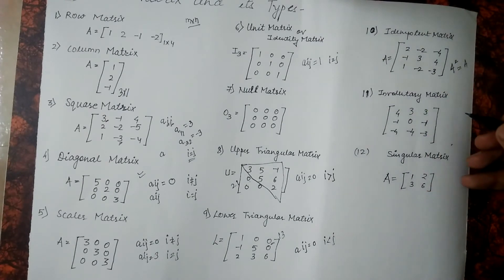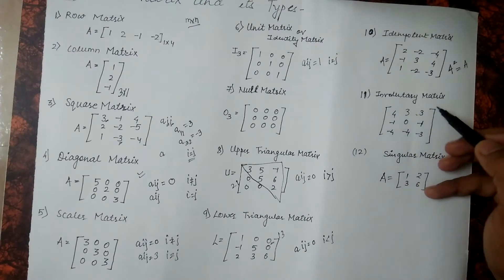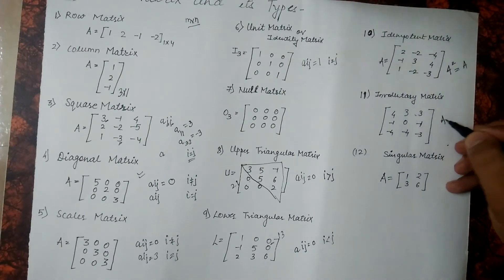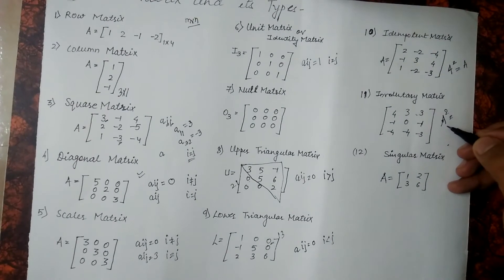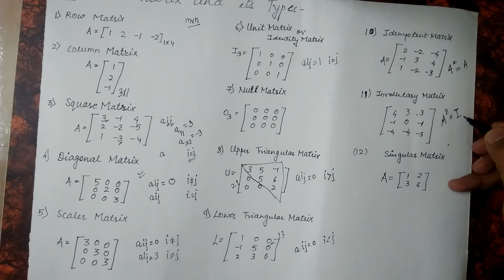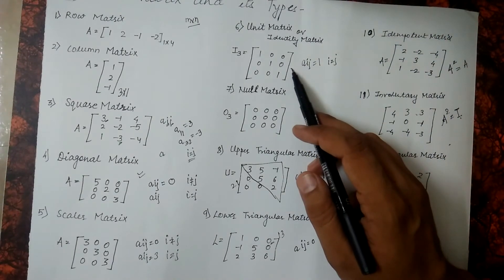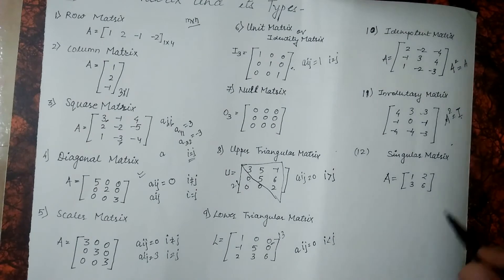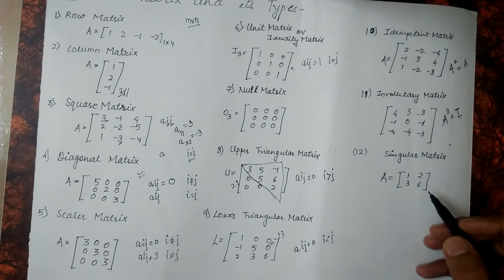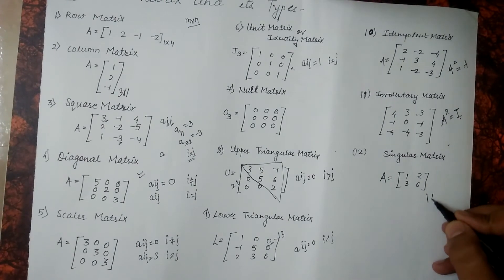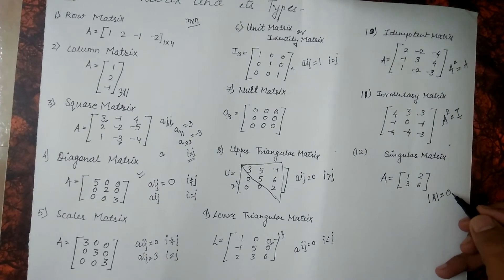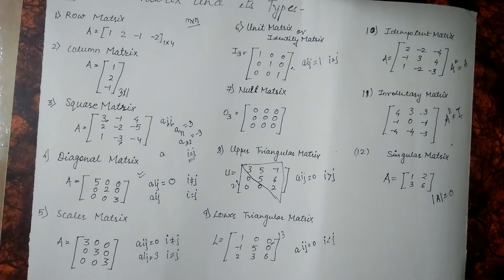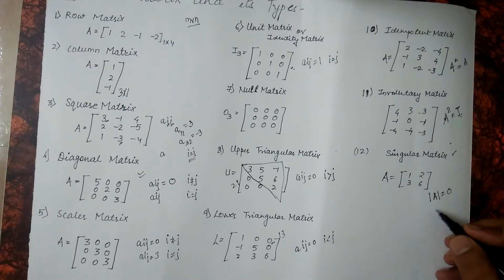The next matrix which we have is the involutory matrix. In this matrix, A squared equals I — that is, if we multiply matrix A by itself we get the identity matrix, also called the unit matrix. The next matrix which we have is the singular matrix. A singular matrix is a matrix which has determinant value 0. How to find the determinant value I will be telling you in my next videos, but a matrix which has determinant value 0 is a singular matrix.